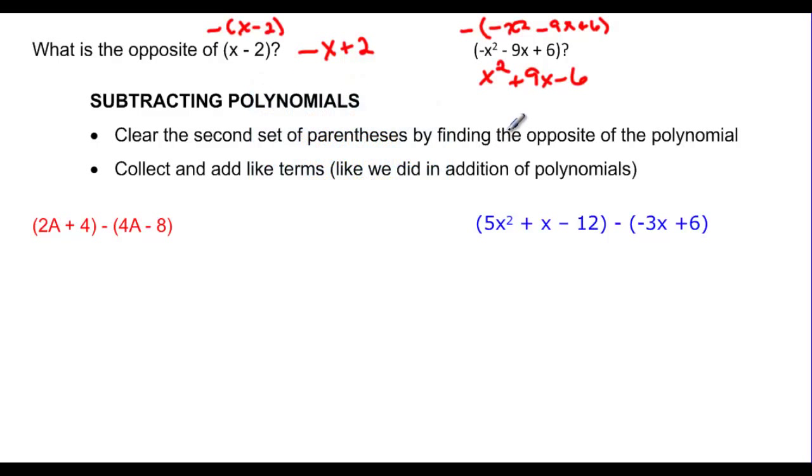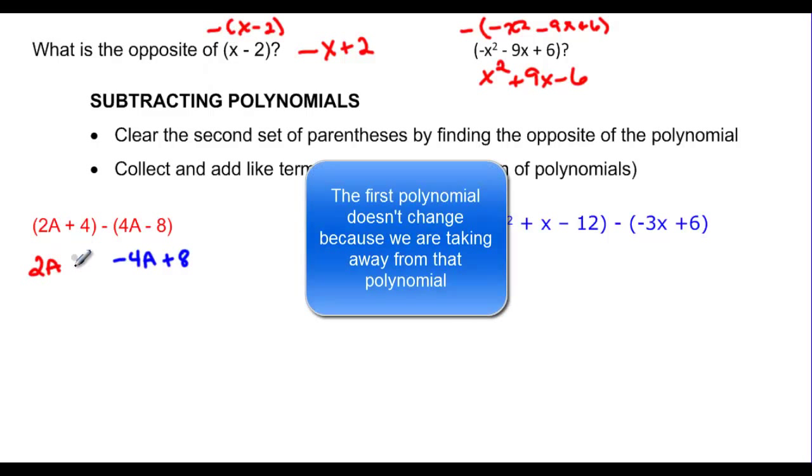So that's what we need to do when we're subtracting polynomials. We need to find the opposite of this second polynomial. So I can rewrite this polynomial here. The opposite of 4a minus 8 would be negative 4a plus 8. And then all I have to do is just carry down the rest of my first one. It doesn't change at all, so I just carry it down. And since I found the opposite first, I already have my operation in front of my next term.